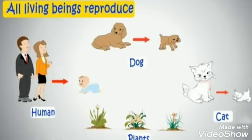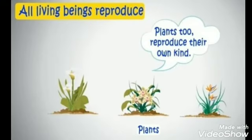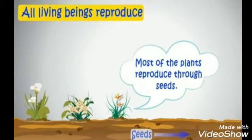All living things reproduce — that is, all living things give birth to their own kind. Similarly, plants too reproduce their own kind. And most plants reproduce through seeds, that is they produce seeds that germinate and produce new plants. Let's see how these seeds are produced.